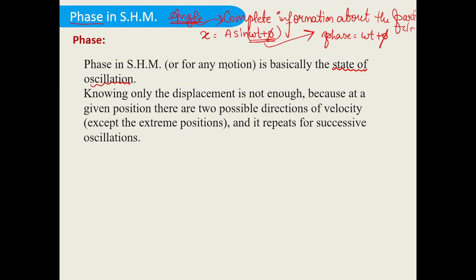Knowing only the displacement is not enough. Suppose you know the value of displacement — suppose x = 1. It is not enough to know the complete information about the particle, because at a given position there are two possible directions of velocity. If the particle is at x = 1, it could be moving towards the positive extreme position or towards the mean position, so velocity has two possible directions.